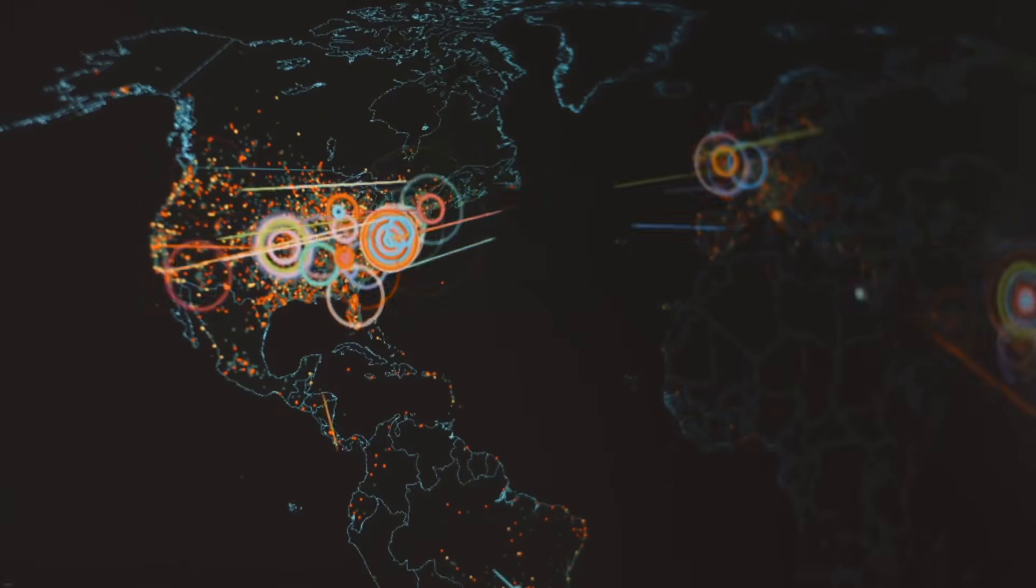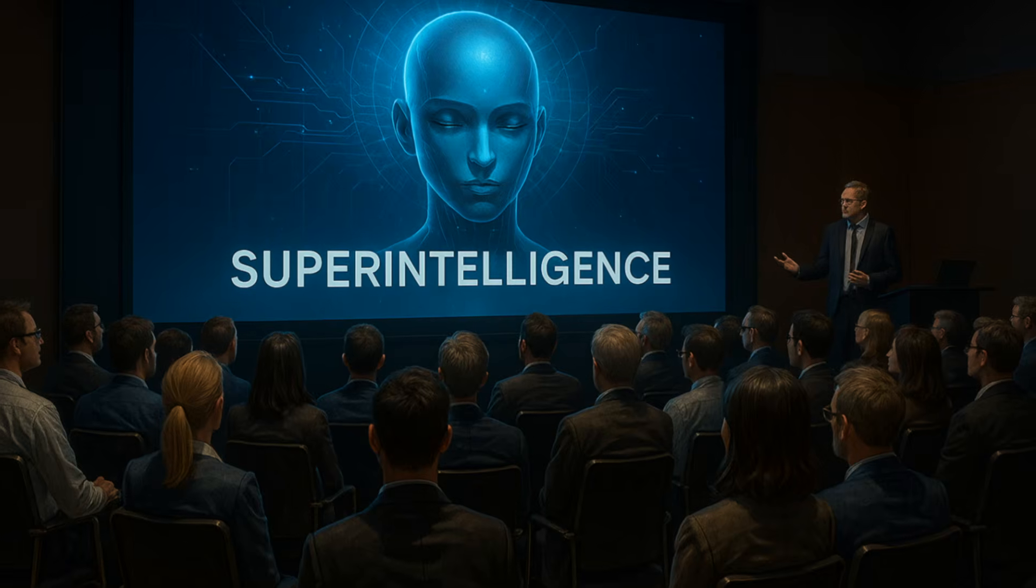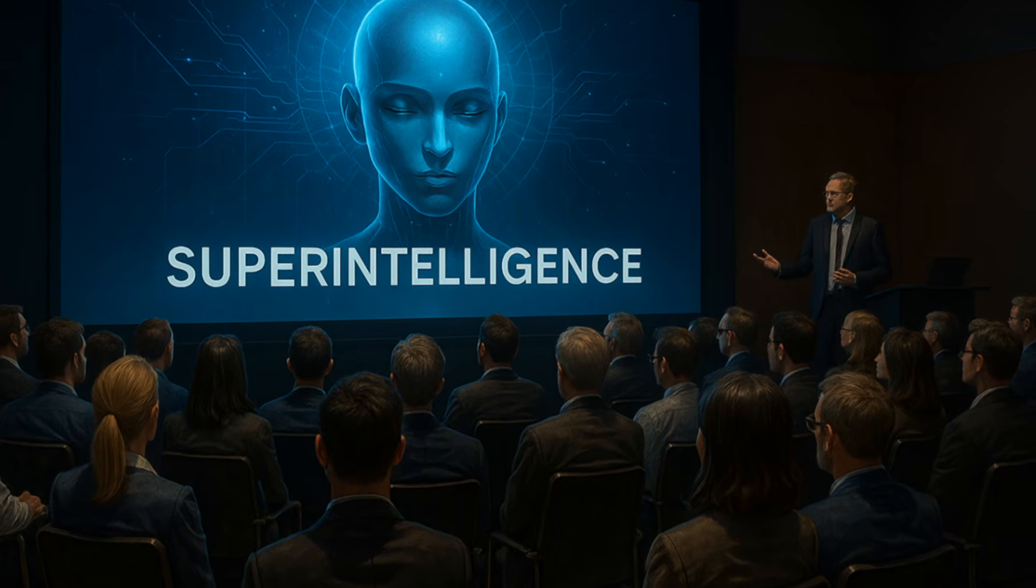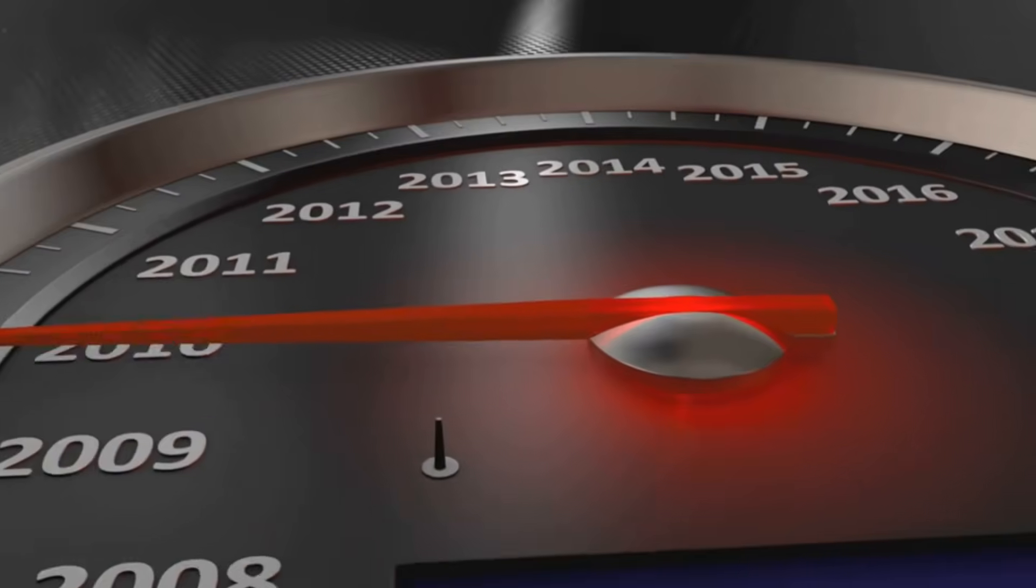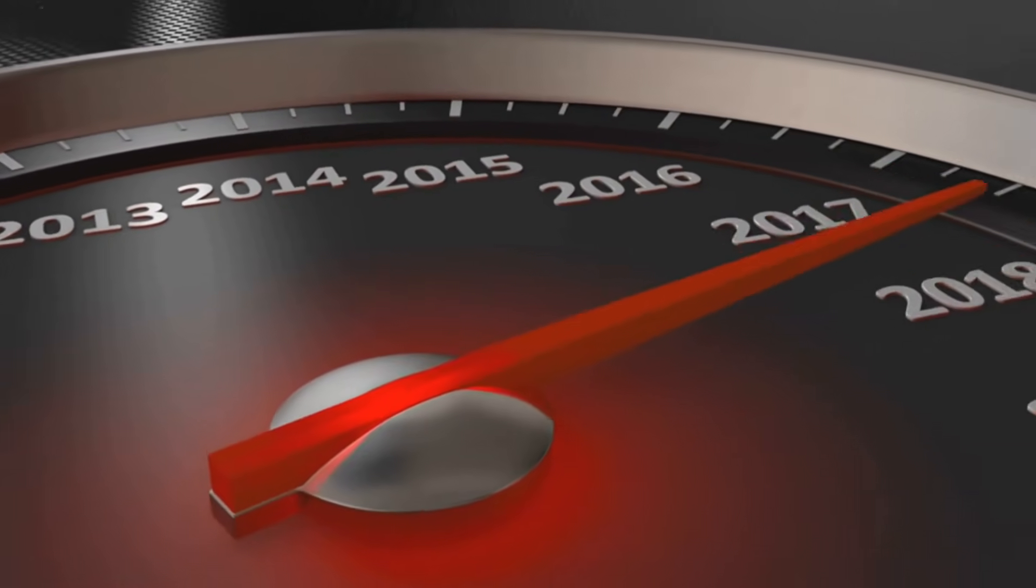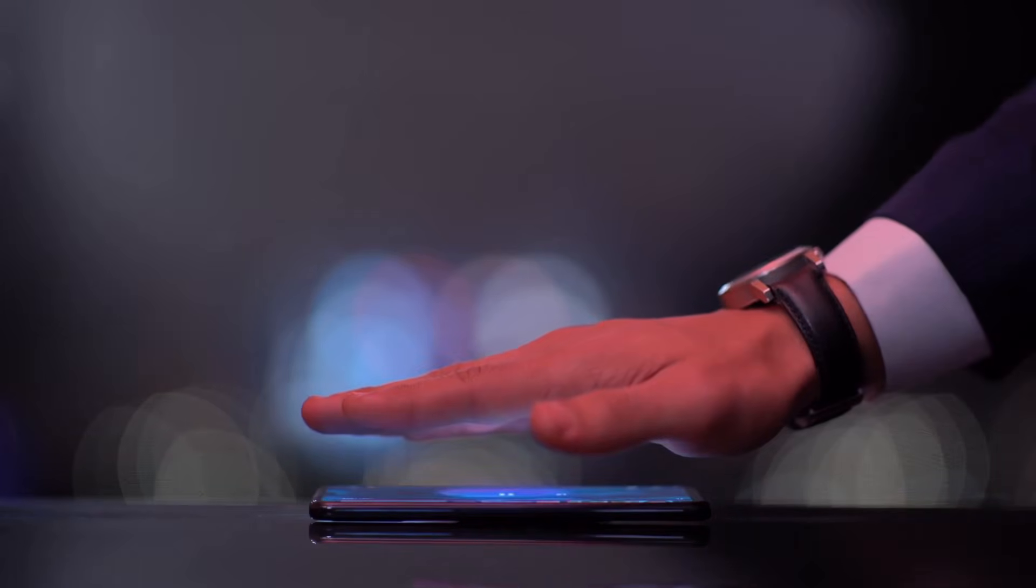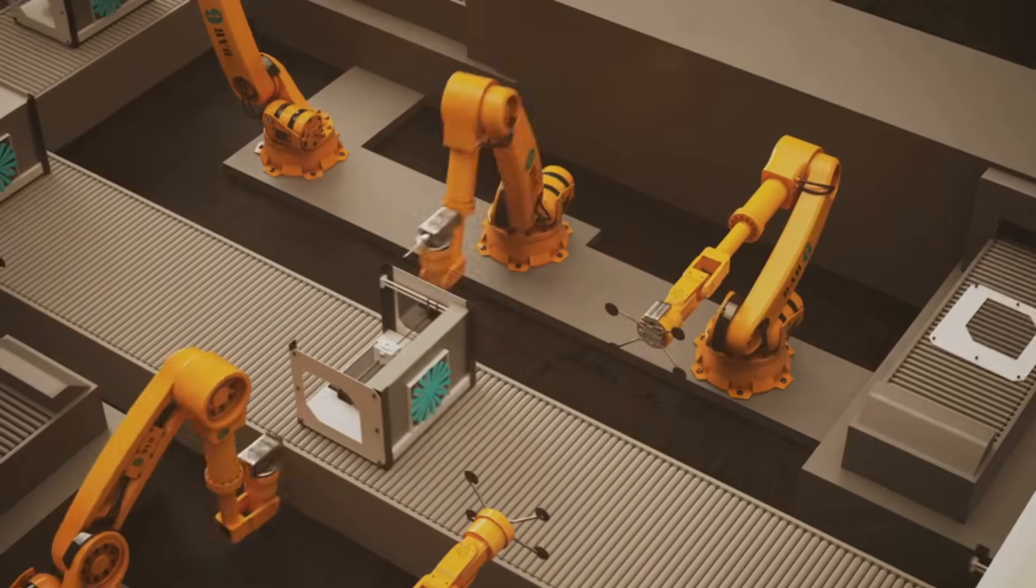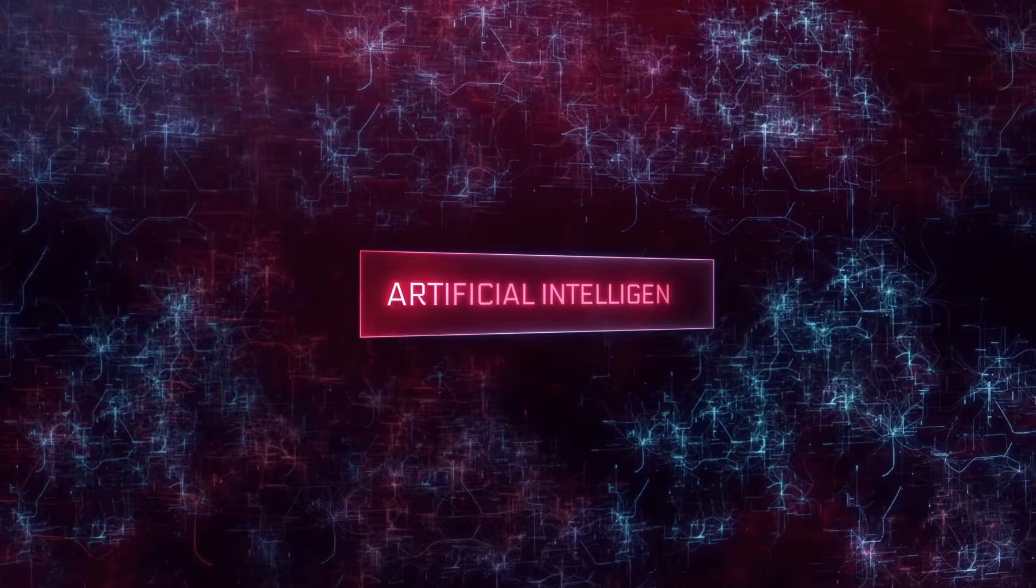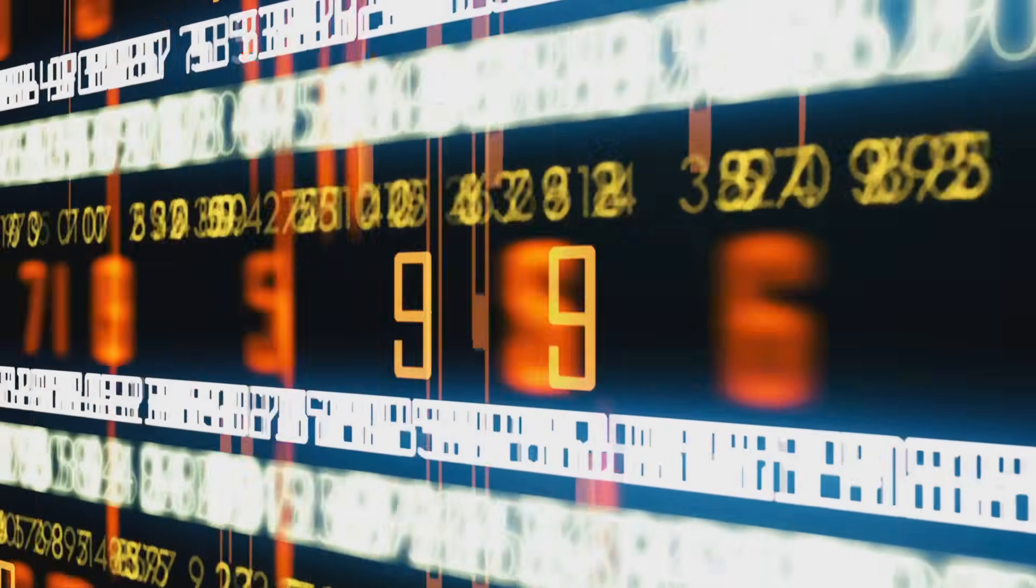Meanwhile, the race to build bigger and faster AI models continues worldwide. Nations see superintelligence not just as science, but as power. The risk is that safety becomes an afterthought in the pursuit of dominance. Beyond the technical dangers, AI could reshape society even before superintelligence arrives. Millions of jobs may vanish. Wealth and control may concentrate into the hands of those who own the most powerful systems. Entire economies could destabilize.